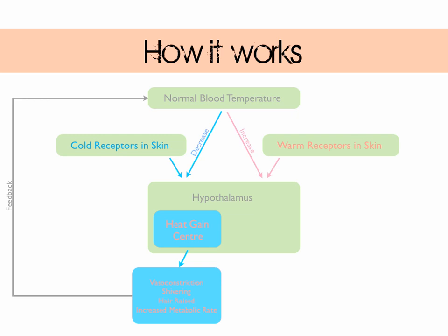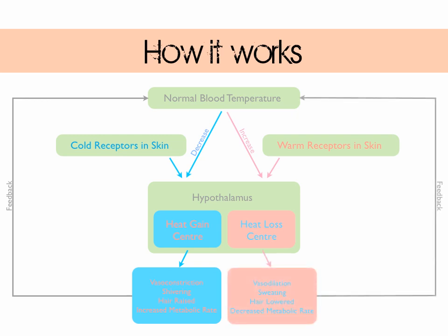Let's now say our blood temperature rises. Once again this is detected by receptors in the skin, and the signals pass onto the hypothalamus. This time the heat loss centre is activated, and then so are the heat loss mechanisms, returning us back to normal temperature. This is also available in your textbook on page 199.